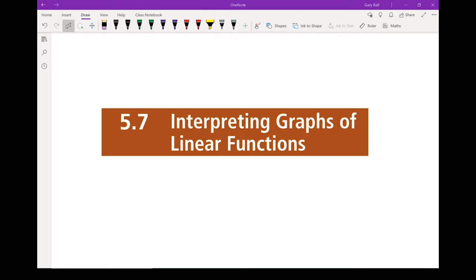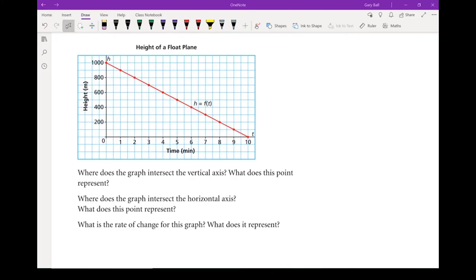5.7 Interpreting Graphs of Linear Functions. Let's take a look at this graph right here. This is the height of a float plane. It starts at a thousand meter height, and over the span of about ten minutes, it reaches a height of zero. So essentially it's coming in for a landing.